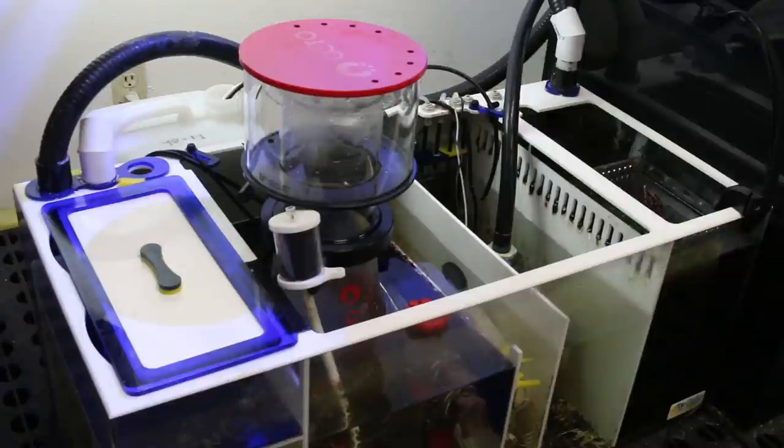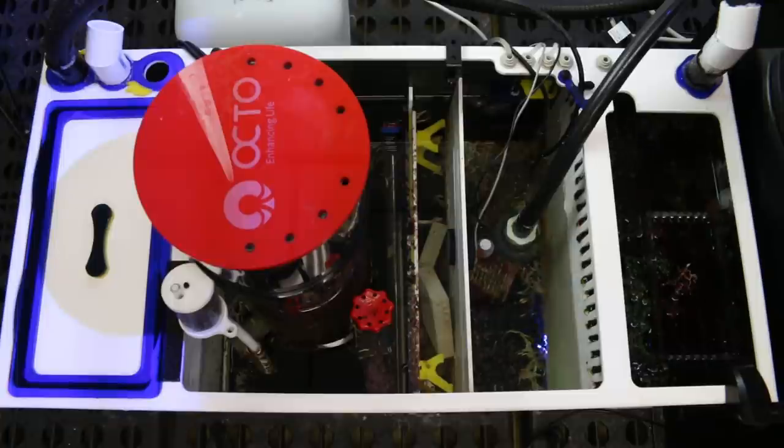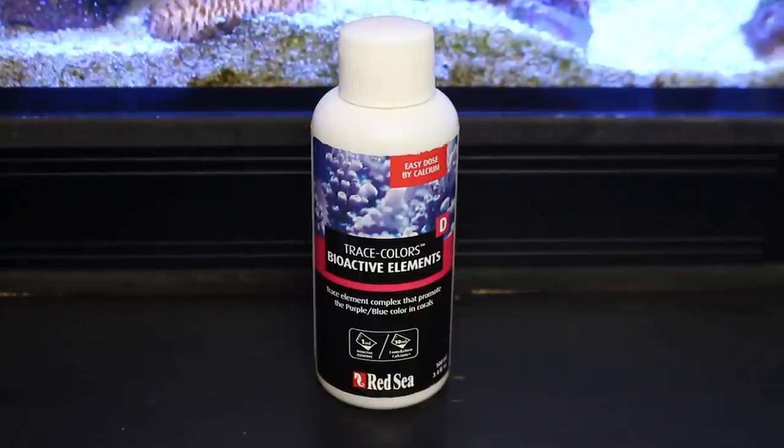A refugium is a great way to culture live foods within the aquarium. It provides a protected environment that acts as a live food farm, releasing a variety of nutritious planktonic organisms into the tank. You can also feed your corals prepared foods.